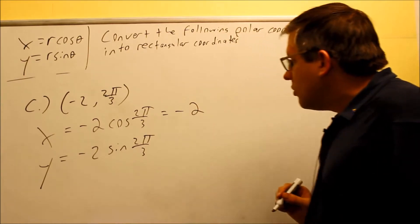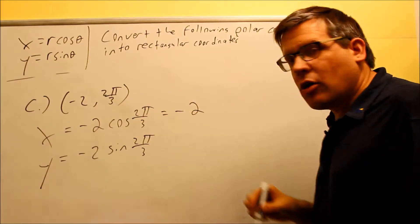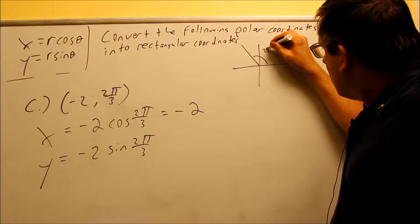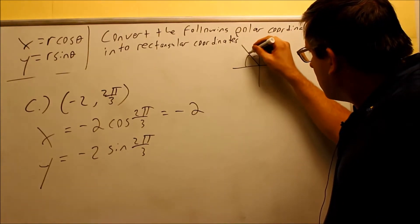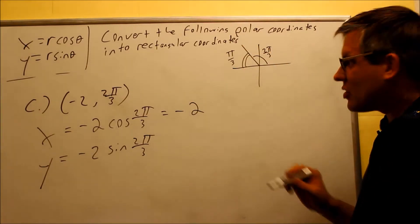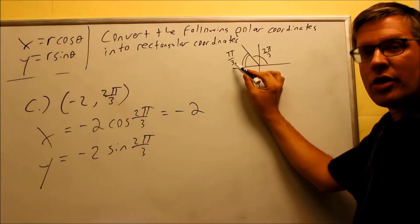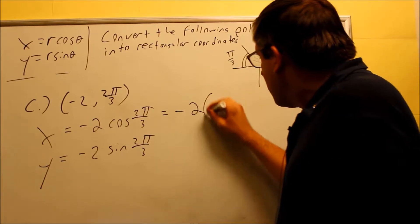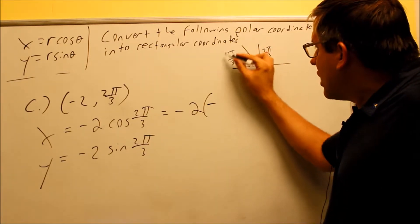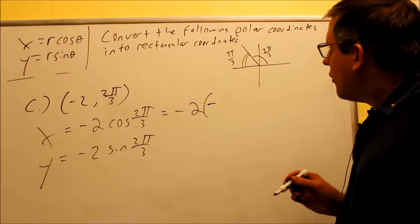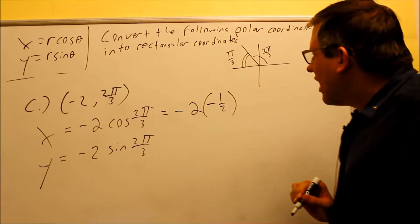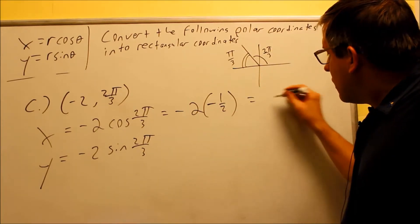Now I want to find the value for cosine of 2 pi over 3. Drawing that out: 2 pi over 3 is in the second quadrant, and the reference angle is going to be pi over 3. So cosine of 2 pi over 3 has the same numerical value as cosine of pi over 3, except it's negative because you're in the second quadrant. That's cosine of 60 degrees, which gives us negative one half. So when I simplify negative 2 times negative one half, I get x equals 1.